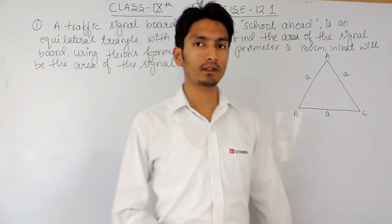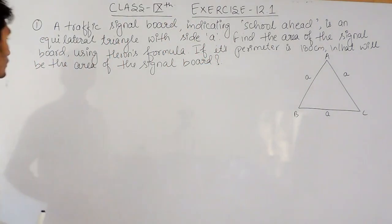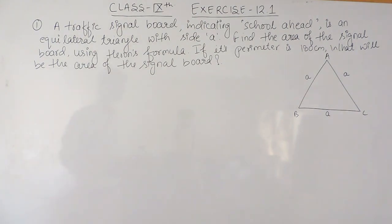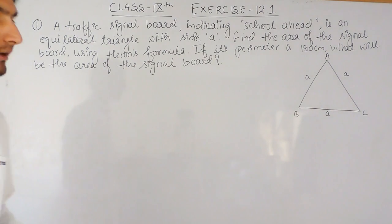Hello everyone. In this video we are going to solve the first question of Exercise 12.1. The question says the traffic signal board indicating school ahead is an equilateral triangle with side A. You have to find the area of the sign board using Heron's formula if its perimeter is 180 cm — what will be the area of the signal board?